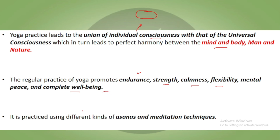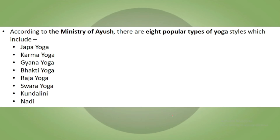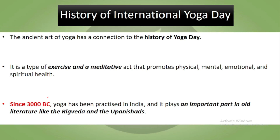Yoga is practiced using different kinds of asanas and meditation techniques. The Ministry of Ayush includes eight popular types of yoga: Jap Yoga, Karma Yoga, Gyan Yoga, Bhakti Yoga, Raj Yoga, Swara Yoga, Kundalini Yoga, and Naadi Yoga.